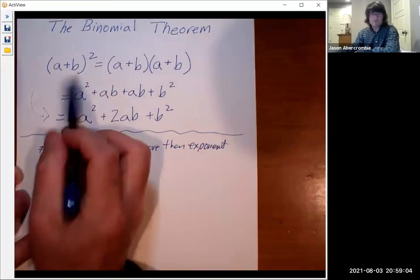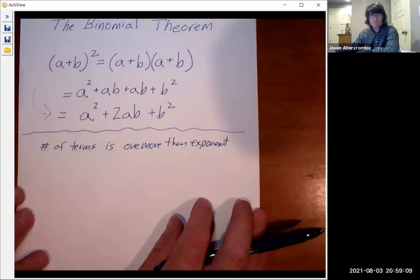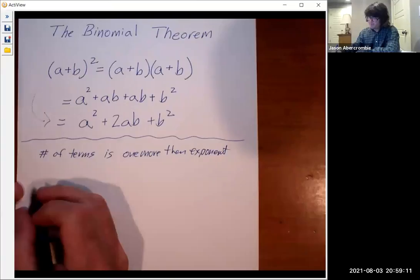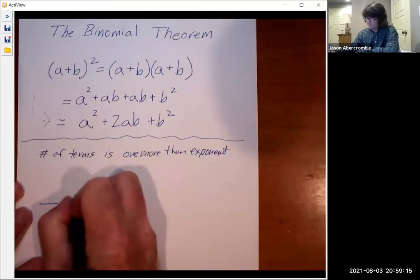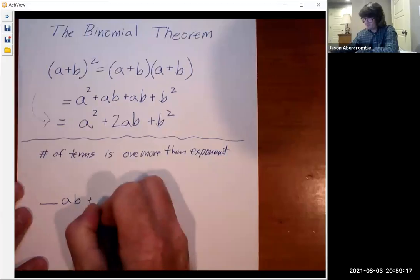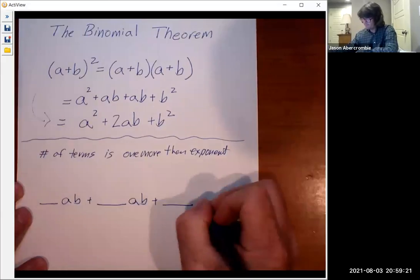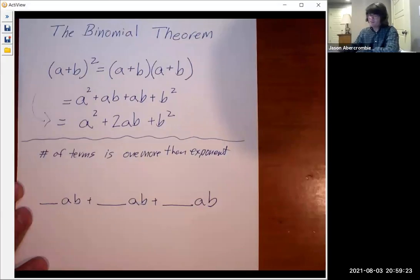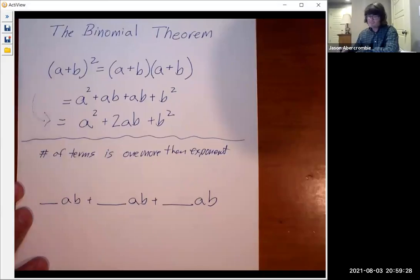So we've got an exponent of two. This means we have three terms. So first of all, we need to know what those terms are. So we're going to have blank ab plus blank ab plus blank ab. So a and b are the two items in the parenthesis. They're in each term. And then I've got a blank out here that represents a coefficient.